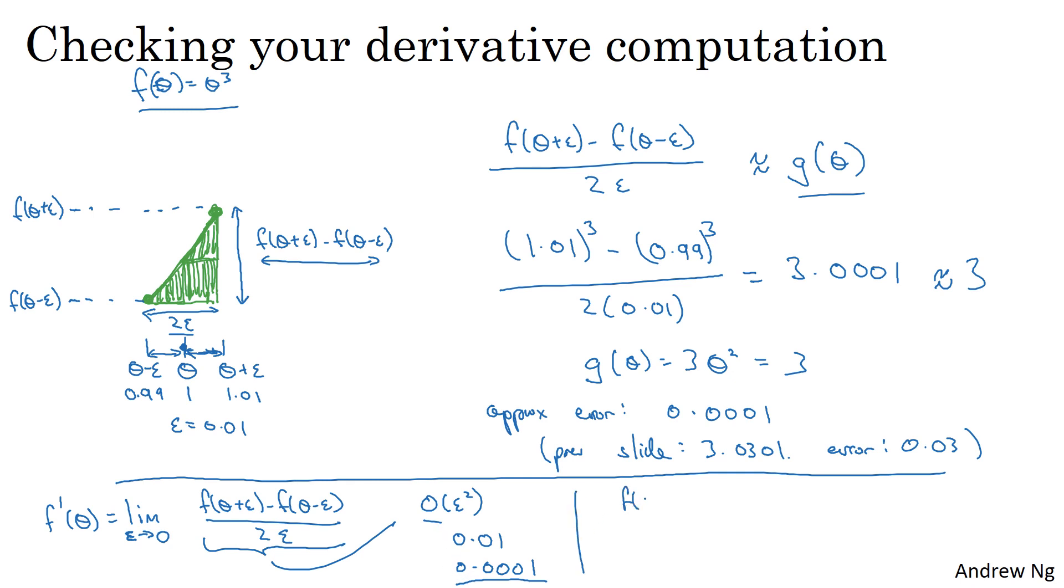Whereas in contrast, if we were to use this formula, the other one, then the error is on the order of epsilon. And again, when epsilon is a number less than 1, then epsilon is actually much bigger than epsilon squared, which is why this formula here is actually a much less accurate approximation than this formula on the left, which is why when doing gradient checking we'd rather use this two-sided difference when you compute f of theta plus epsilon minus f of theta minus epsilon and then divide by two epsilon, rather than this one-sided difference which is less accurate.